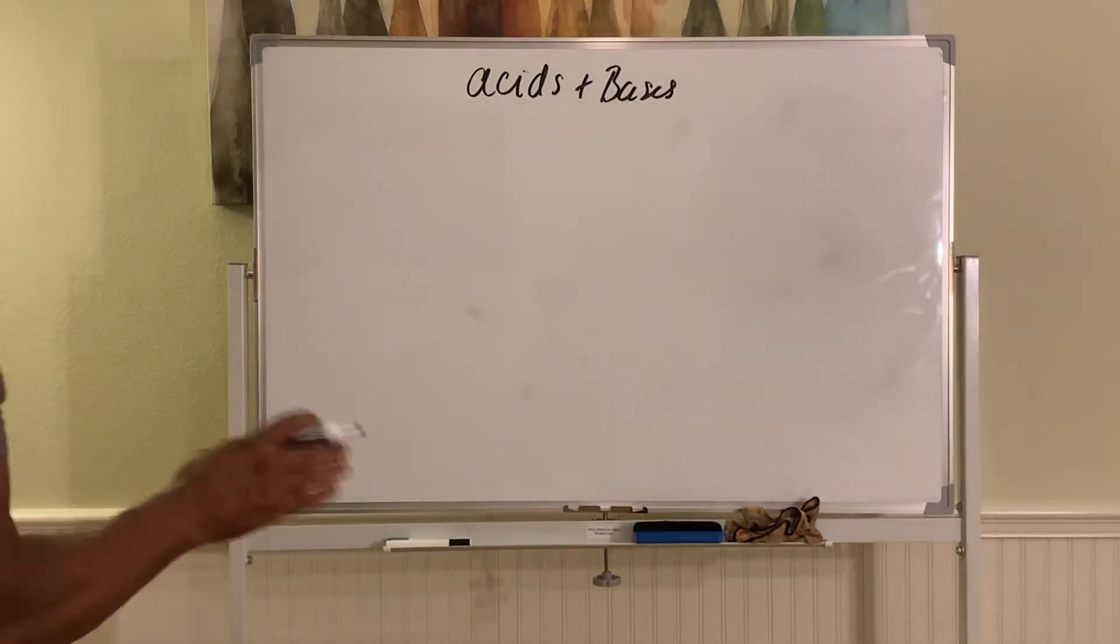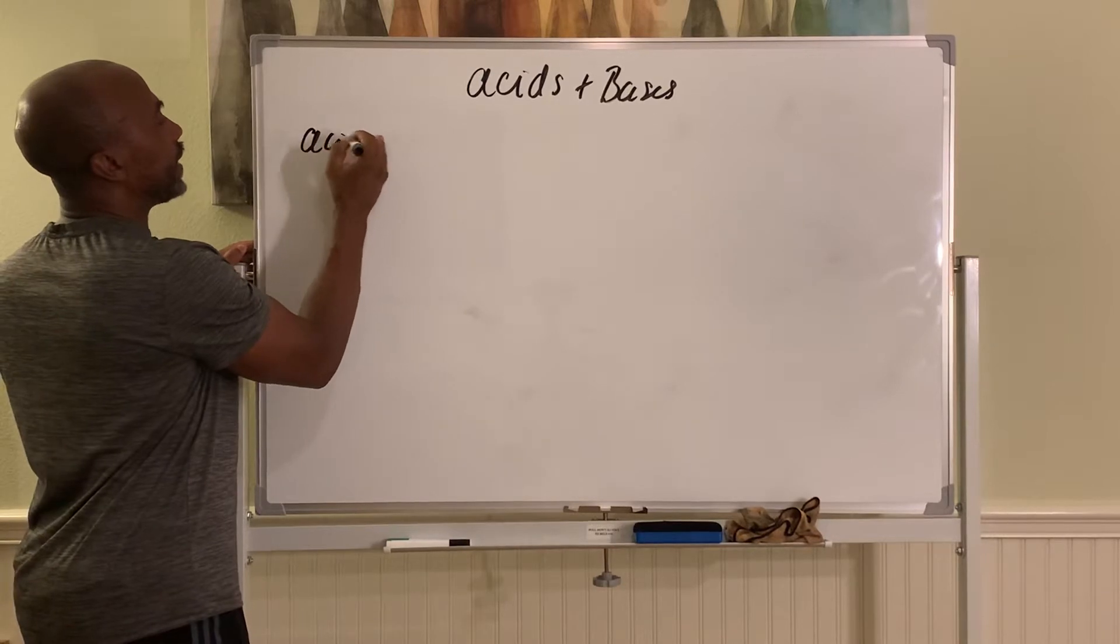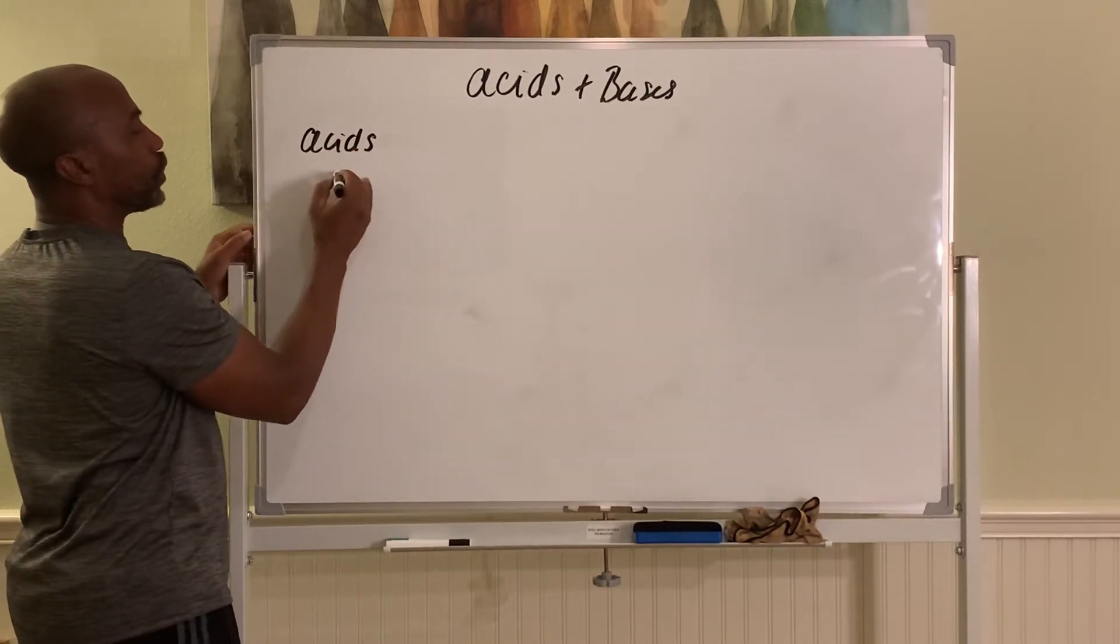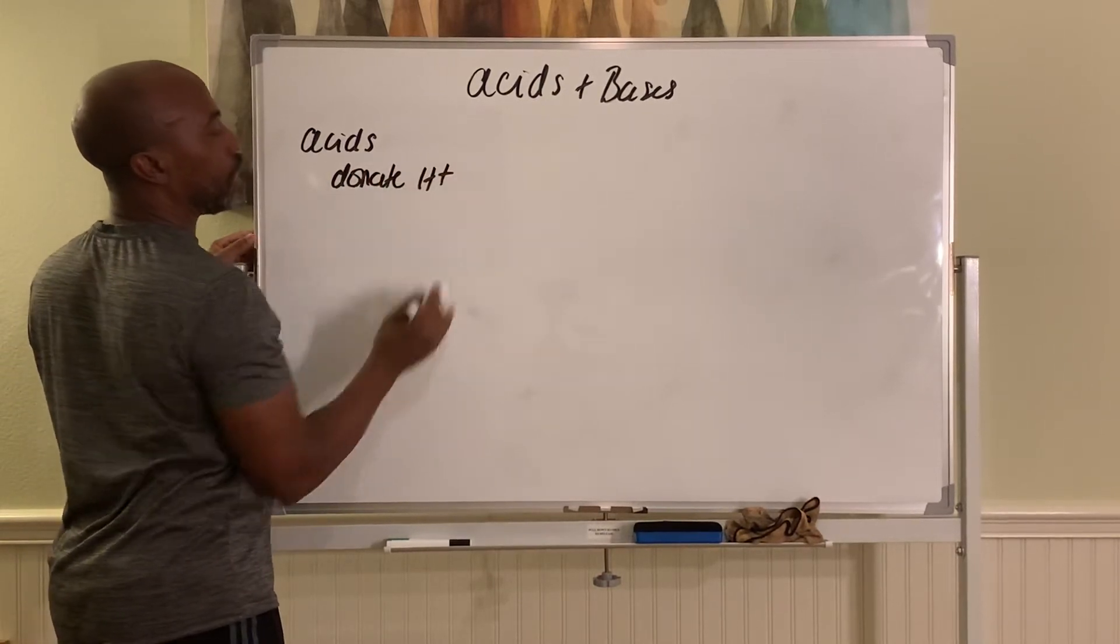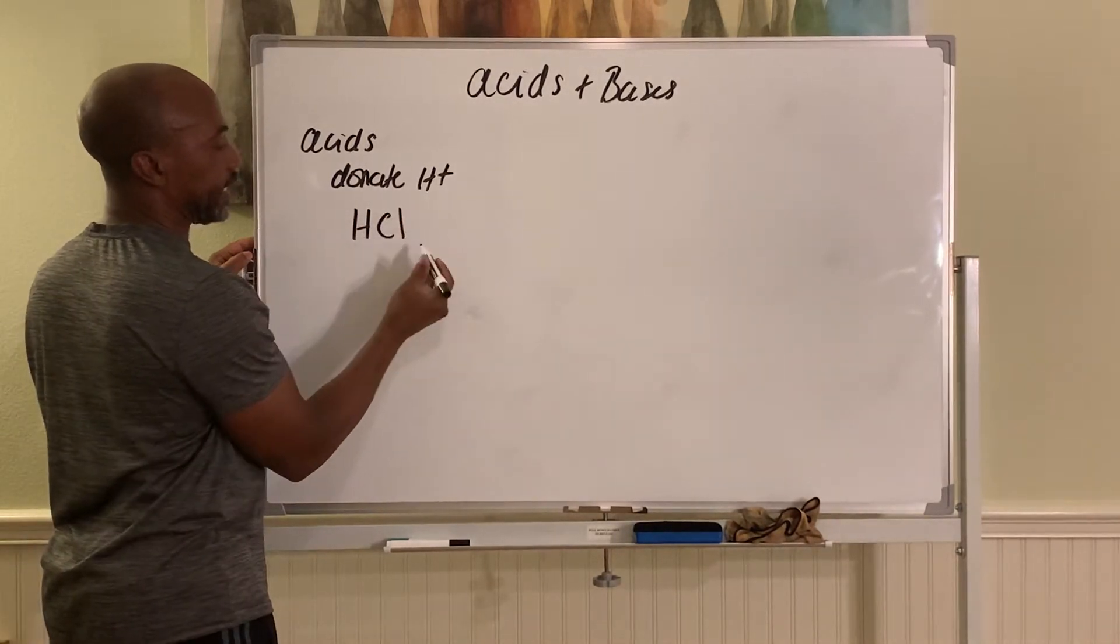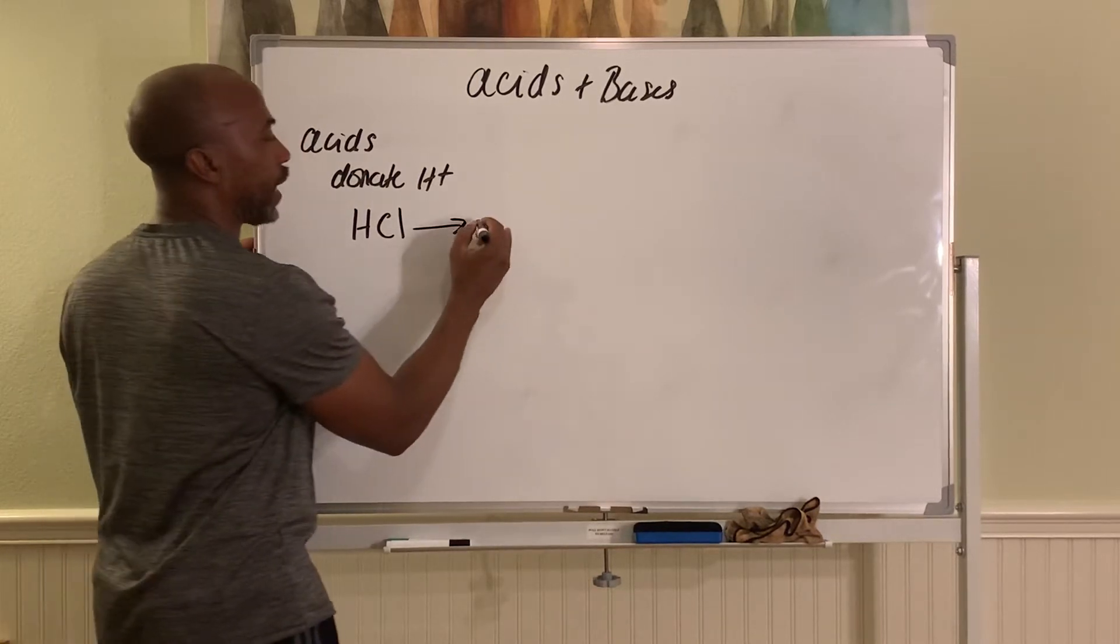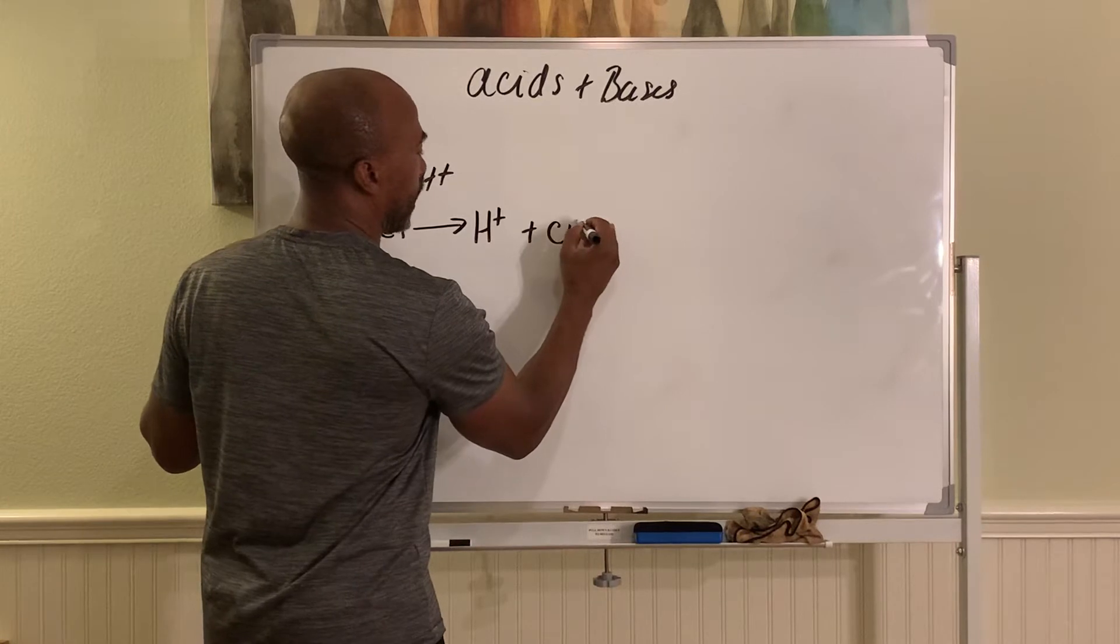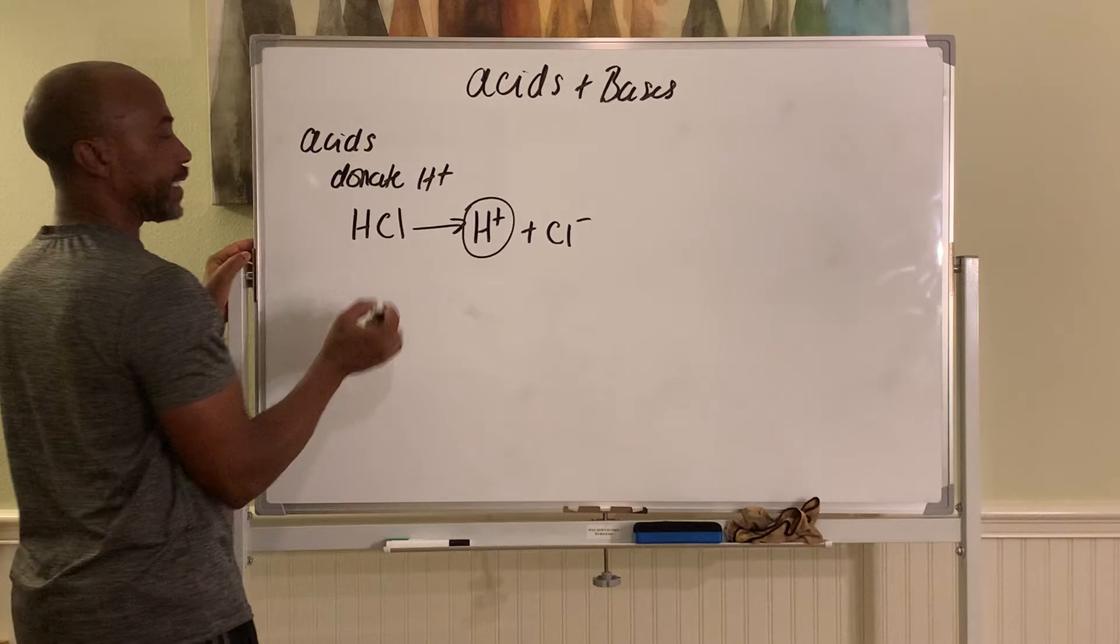Let's discuss acids and bases. Acids are compounds or molecules that donate H plus in solution. For example, HCl, hydrochloric acid, will dissociate in water to form H plus and Cl minus. So because it donates H pluses, it's an acid.